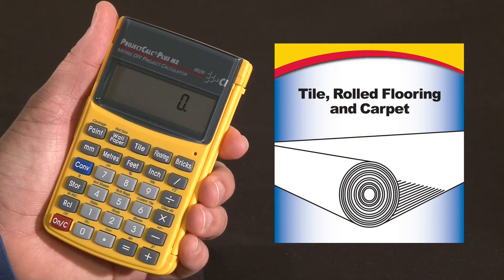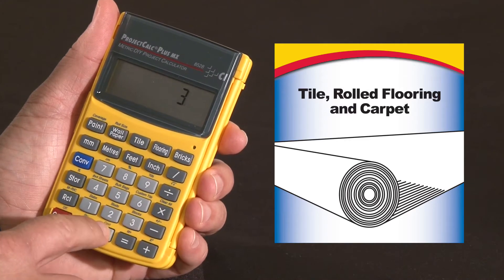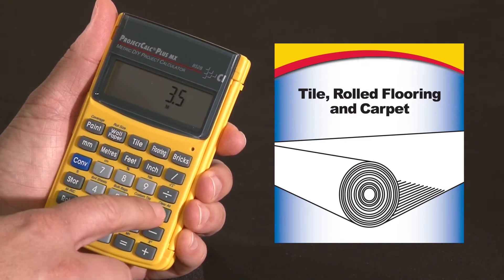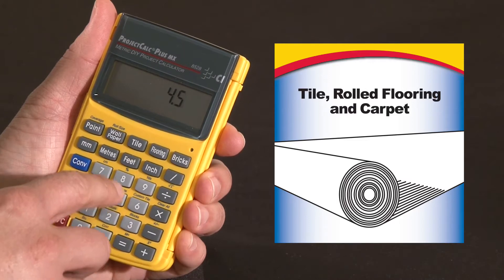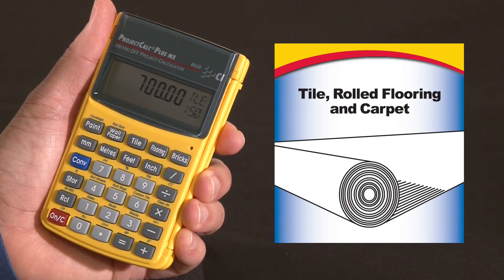Now let me show you how we estimate based on a given area for tile and flooring. Say we have a 3.5 meter by 4.5 meter area and we want to look at the different sizes of tile that we can put down.